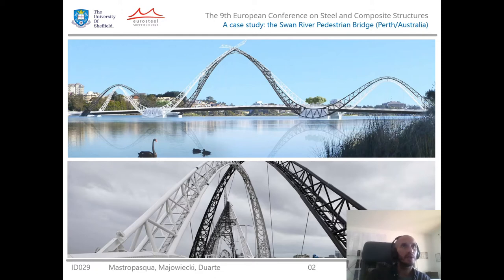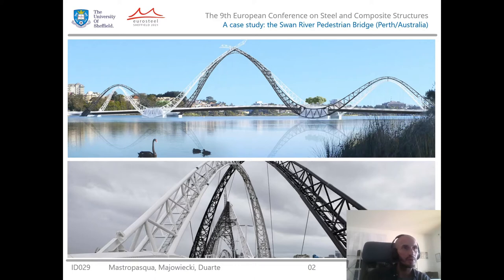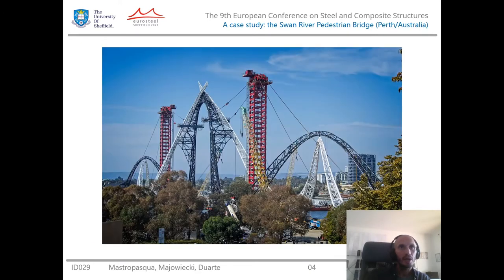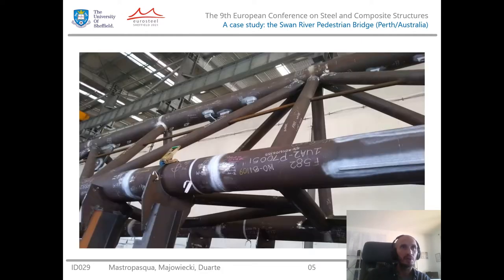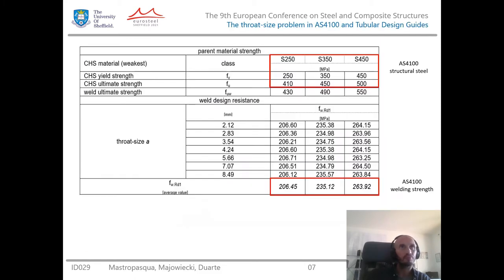The Swan River pedestrian bridge is a strange and amazing bridge recently realized in Perth, Australia. It is characterized by a really curious overall shape, but also by multi-intersection of tubes with several overlapping elements to create the truss effect. This is the structural section of this bridge, which led the designers to face once more the problem of the throat size in dimensioning and verification of the welding.